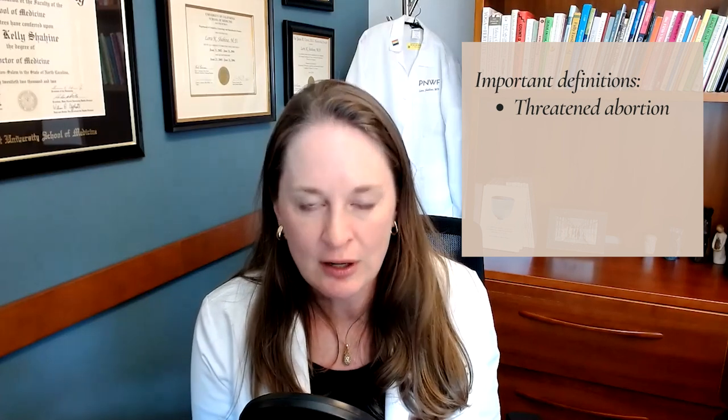Some important terms you might see in your medical chart: a threatened abortion is any pregnancy in which there is spotting or bleeding. Someone could come in eight weeks pregnant with spotting, bleeding, or a little cramping, but on ultrasound the fetus is growing appropriately with an appropriate heartbeat. The pregnancy has not stopped developing — it's not a miscarriage, but it's a threatened miscarriage. In the chart, it will say 'threatened abortion.'